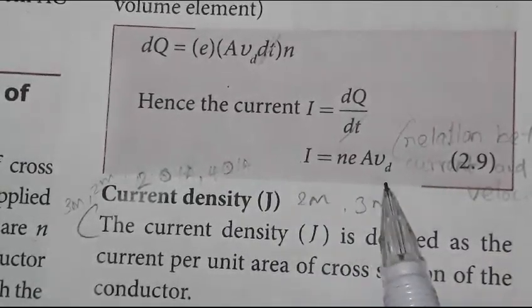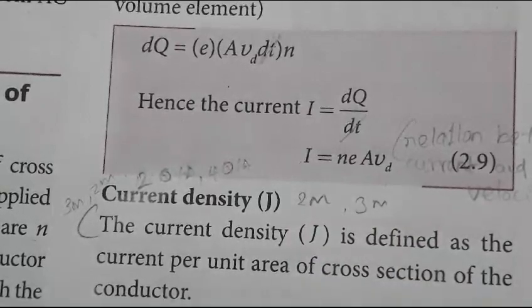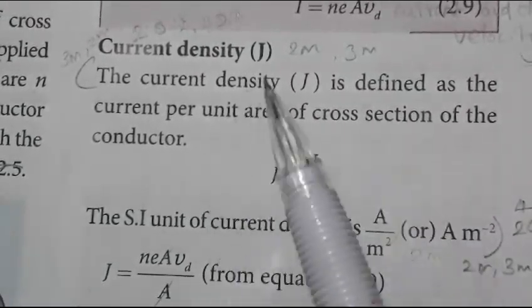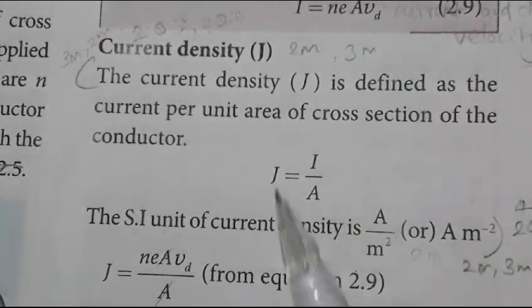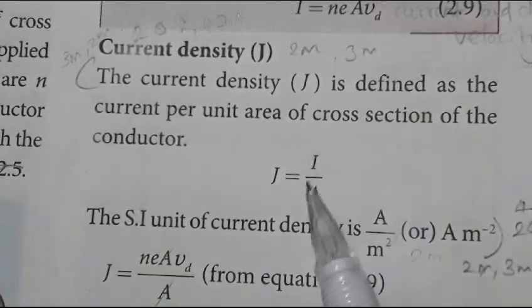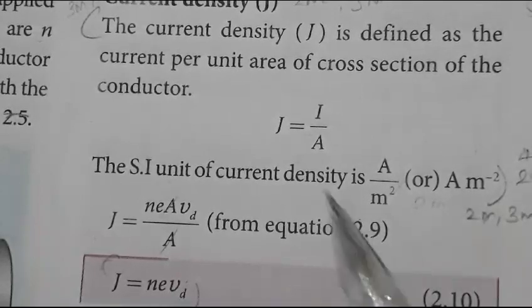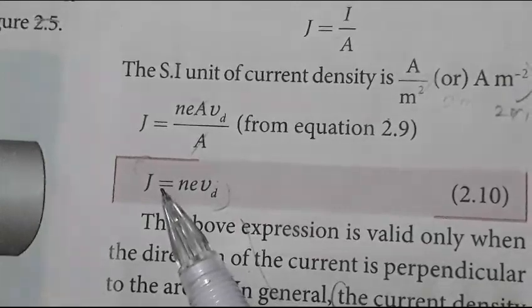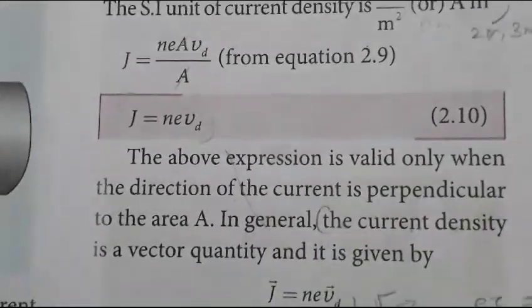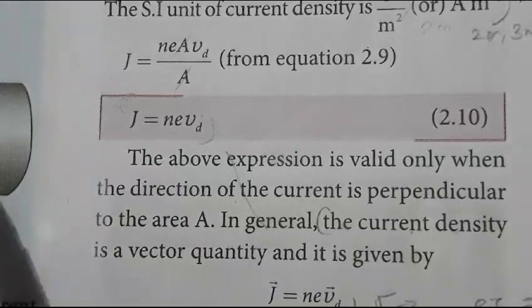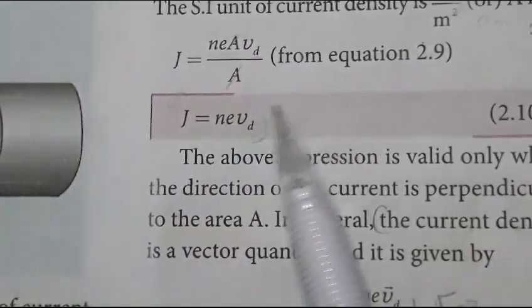This gives the relation between current and drift velocity. Current density J is defined as the current per unit area of cross section of the conductor, expressed in A per m squared. So J equals i divided by A, and since i equals nAevd, we get J equals nevd. This expression is valid when the current direction is perpendicular to the area A.